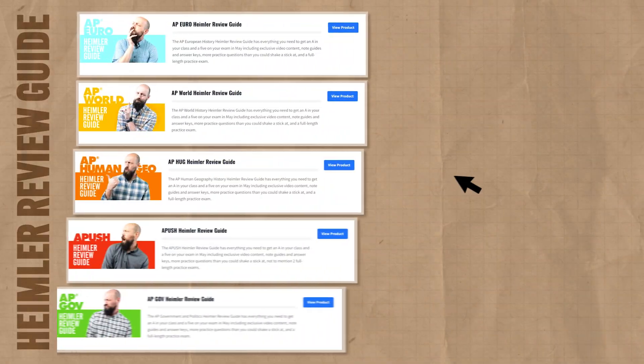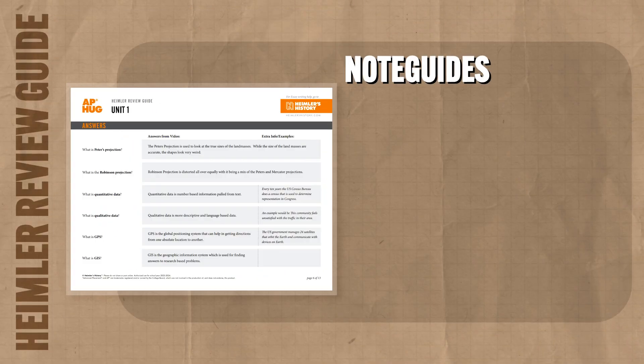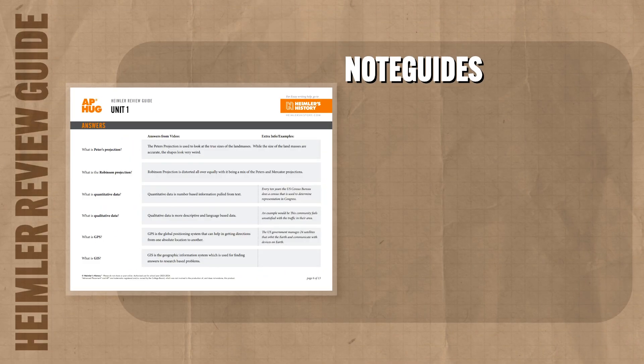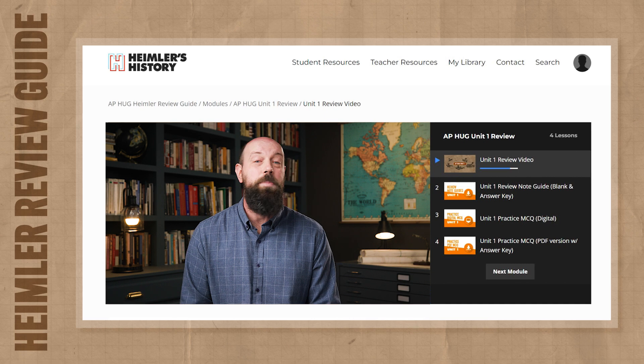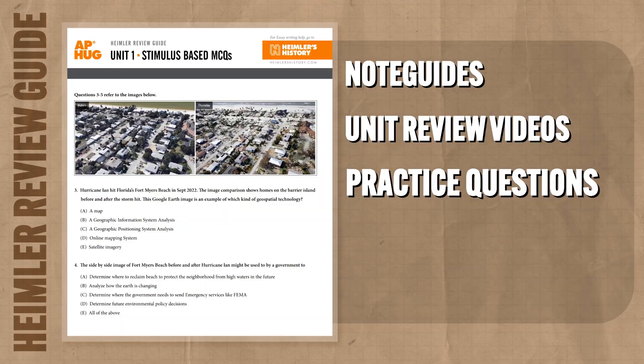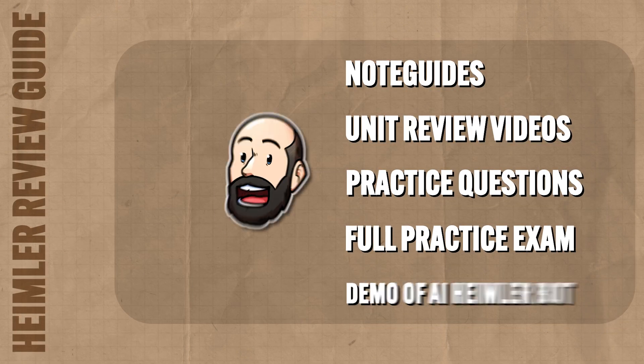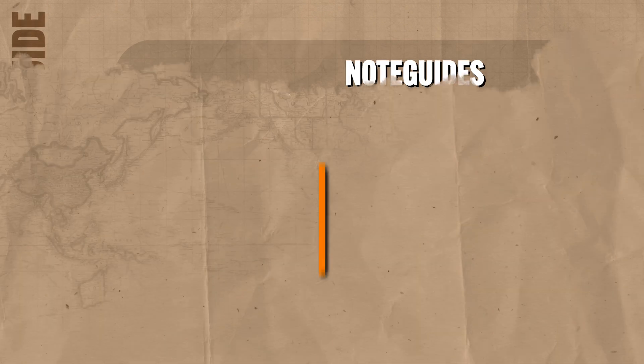Responsible governments planning for the future of their cities make use of both kinds of data in order to make decisions. And if you need help getting an A in your class and a 5 on your exam in May, you can check out my AP Human Geography Heimler Review Guide — it's the fastest way to study for your exams, and you can find the link in the description.